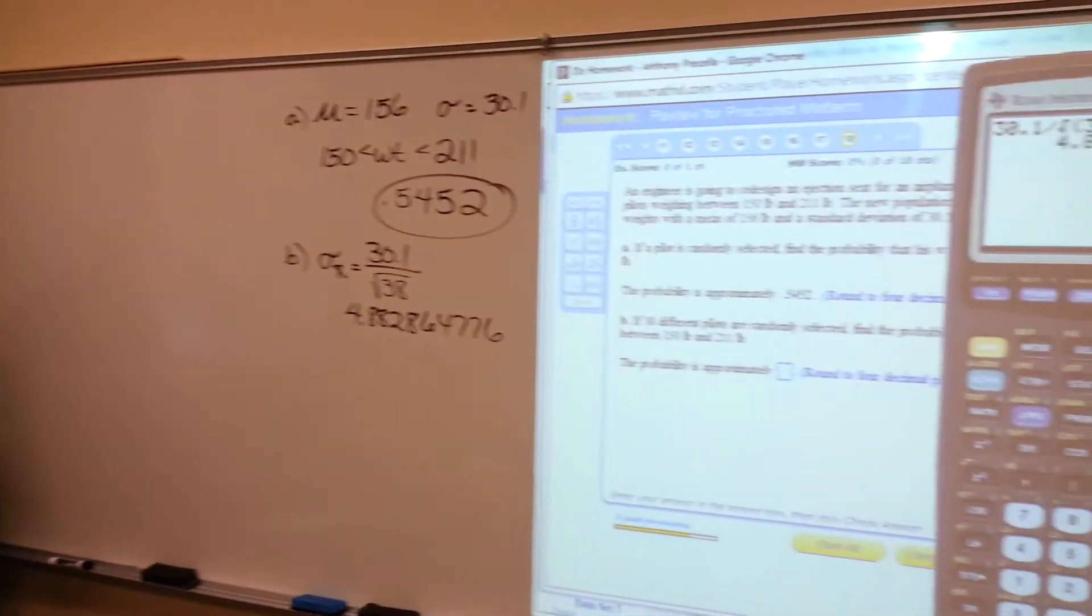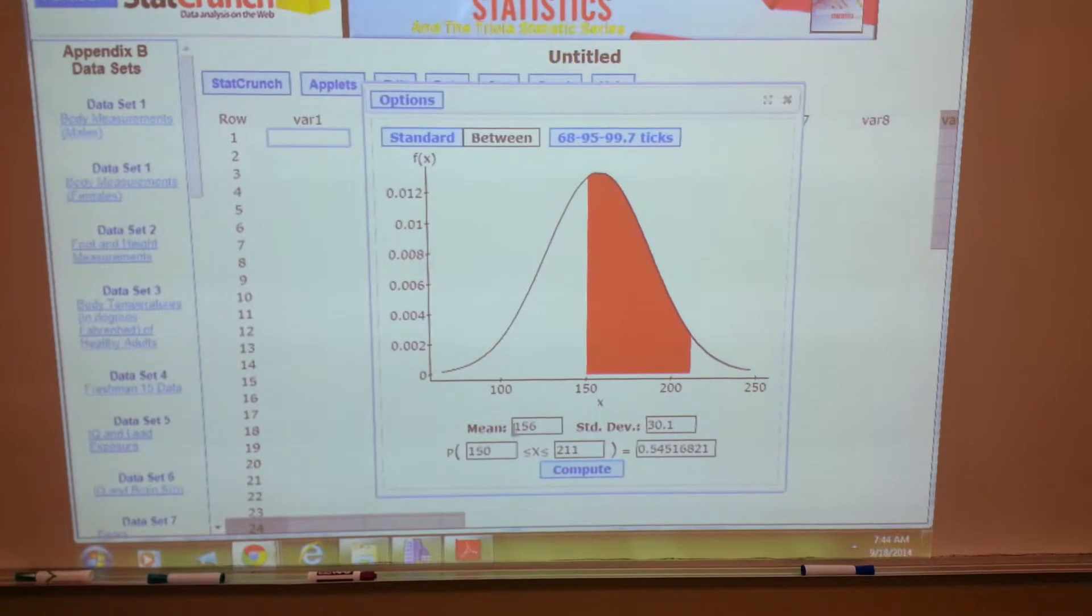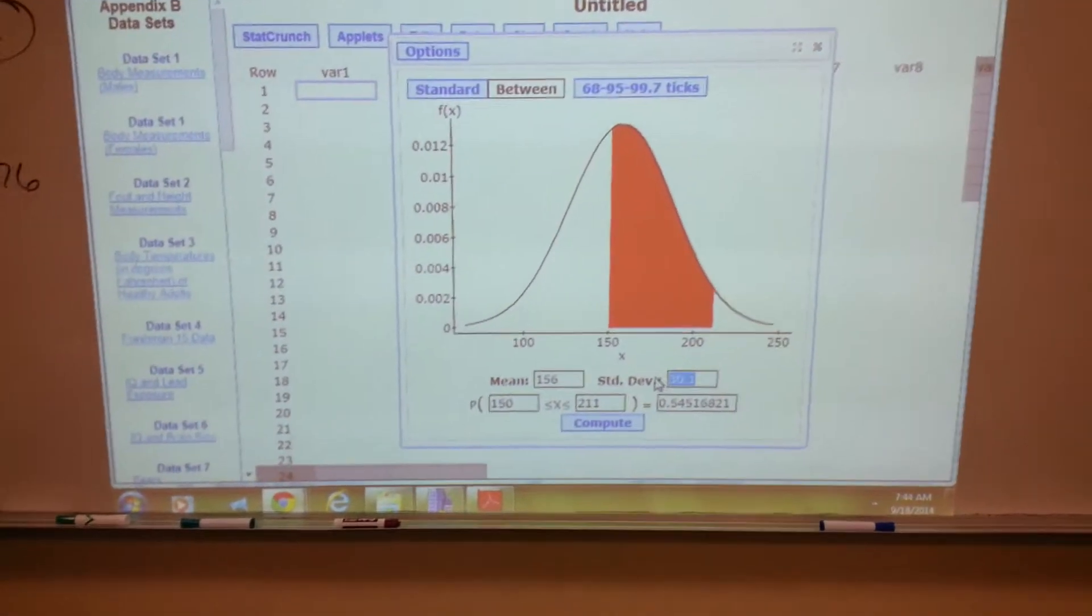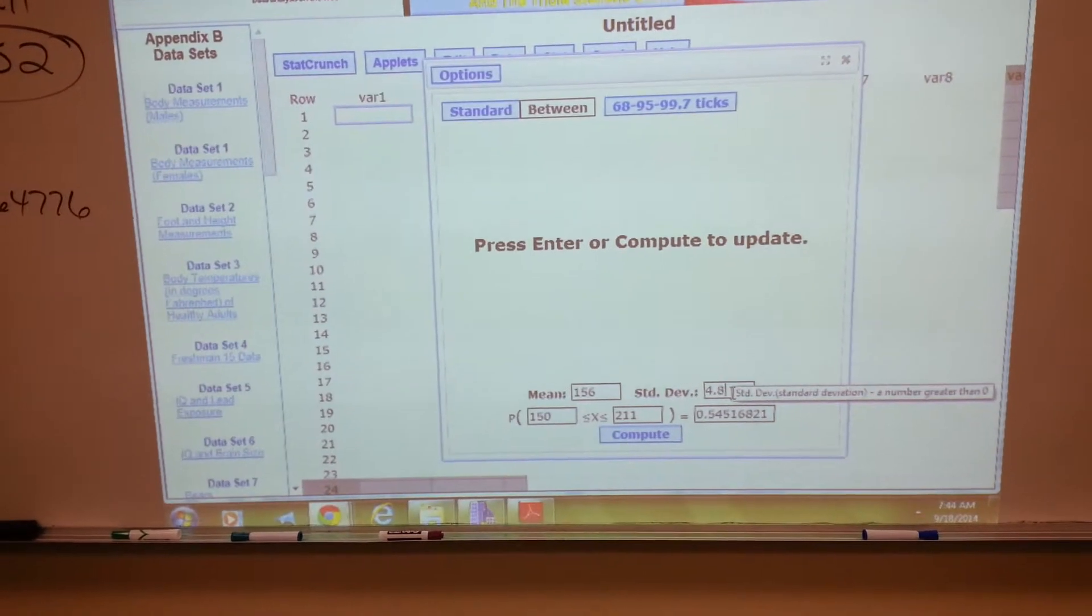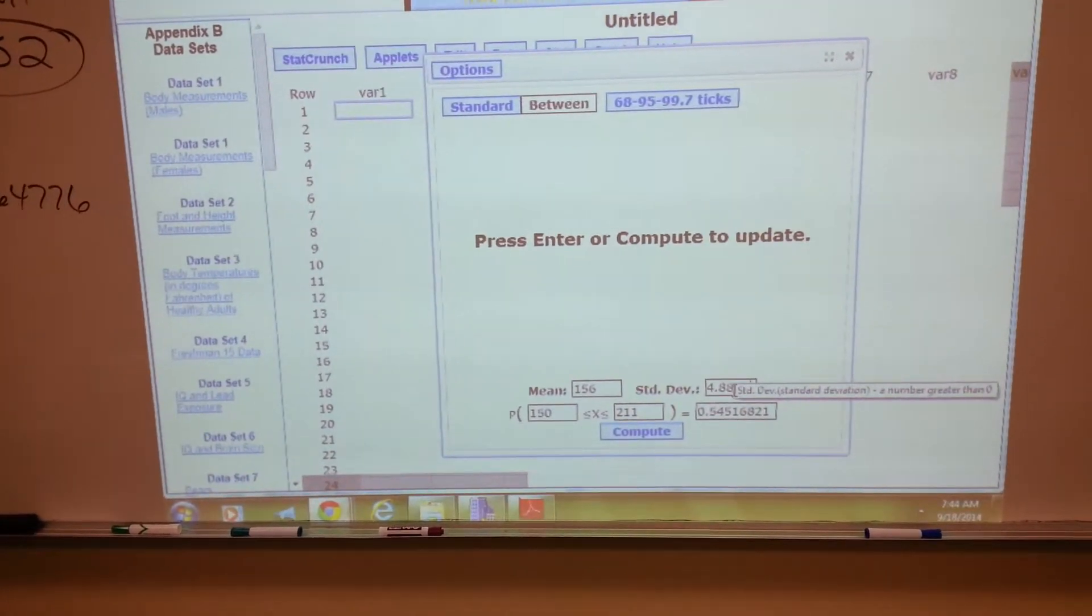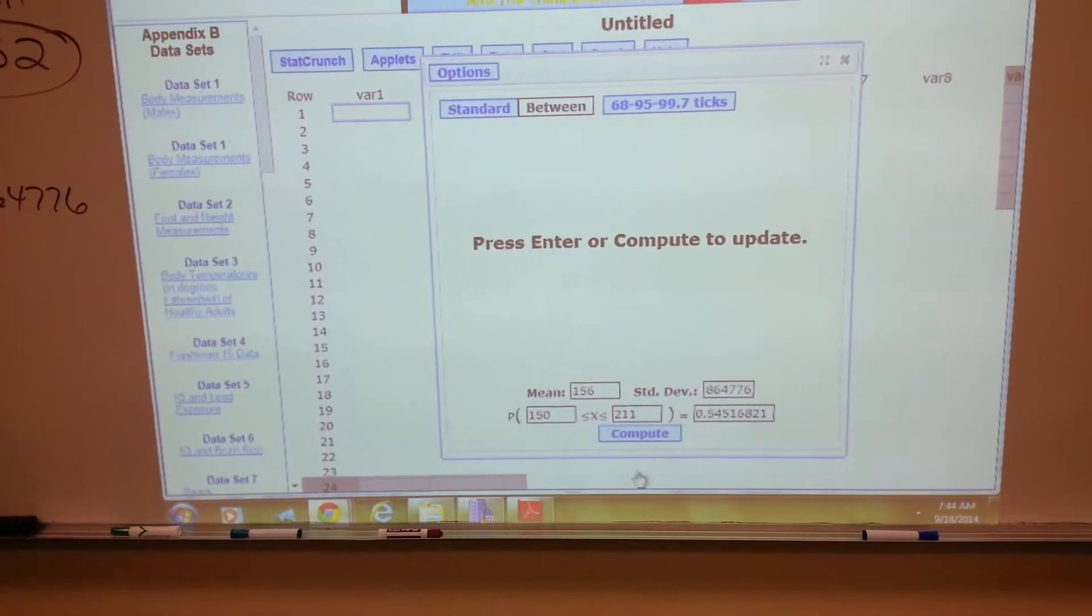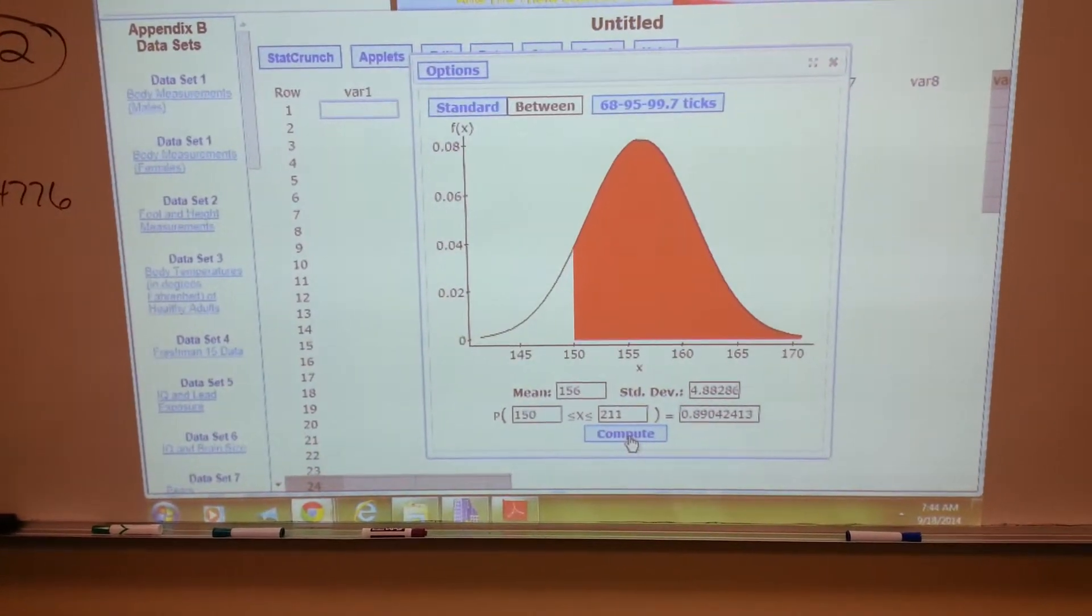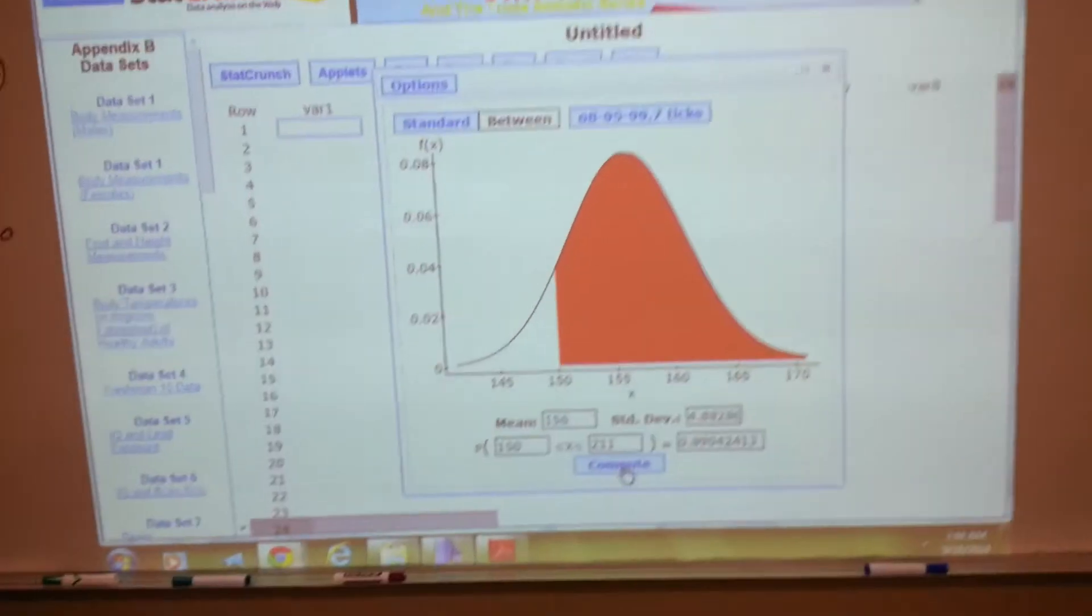Now come back to StatCrunch, and the only thing you have to do is change the standard deviation. 4.882864776, say compute. 0.8904.